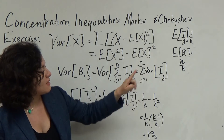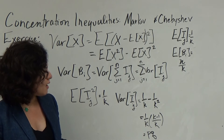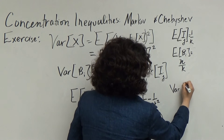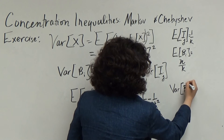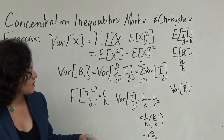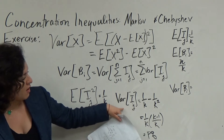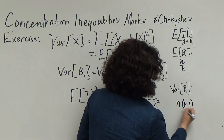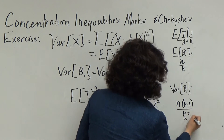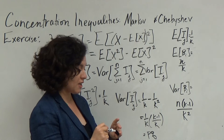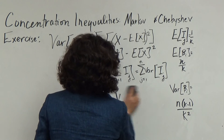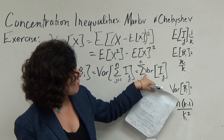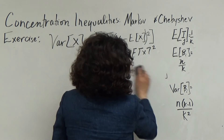Since this variance is the same for all indicator variables, the variance of bi is n times the variance of the indicator: Var(bi) = n(k−1)/k². We'll keep this result and now move to actually calculating the probability we're interested in.